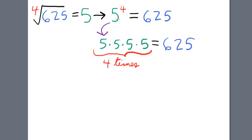5 to the 4th is 5 multiplied by itself a total of 4 times. So 5 multiplied by itself 4 times is 625.